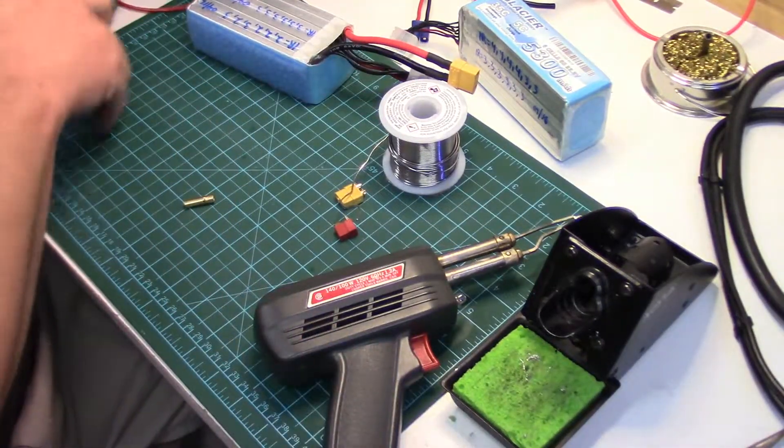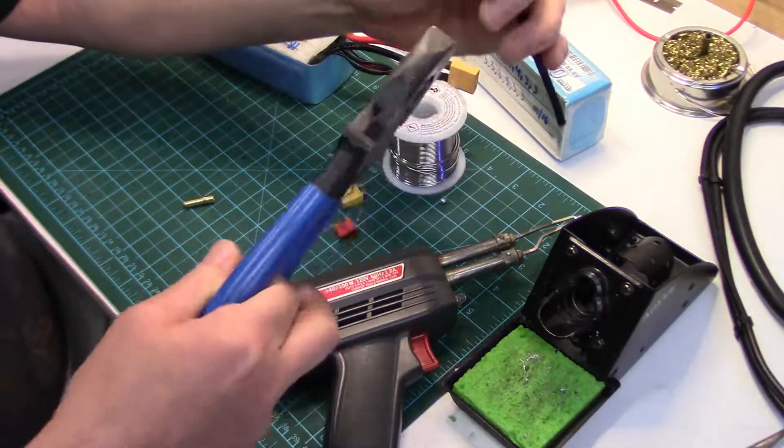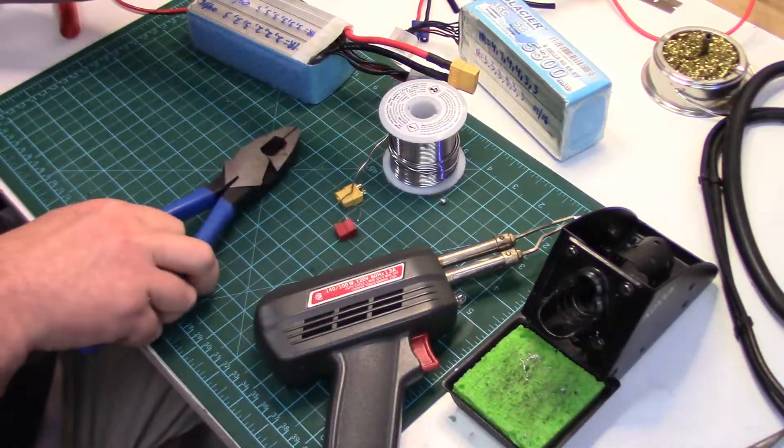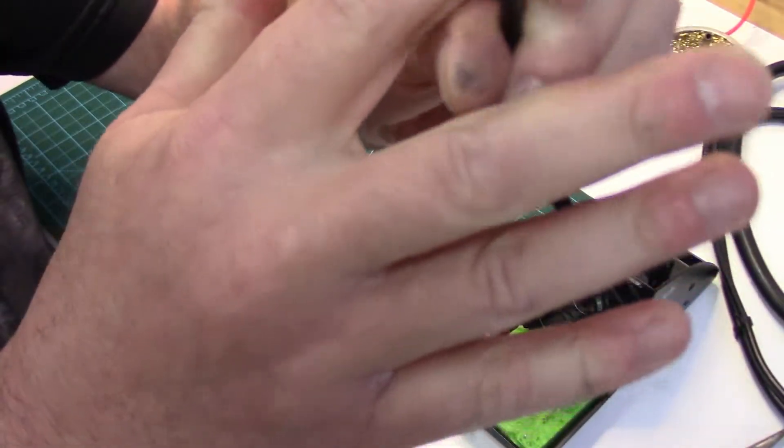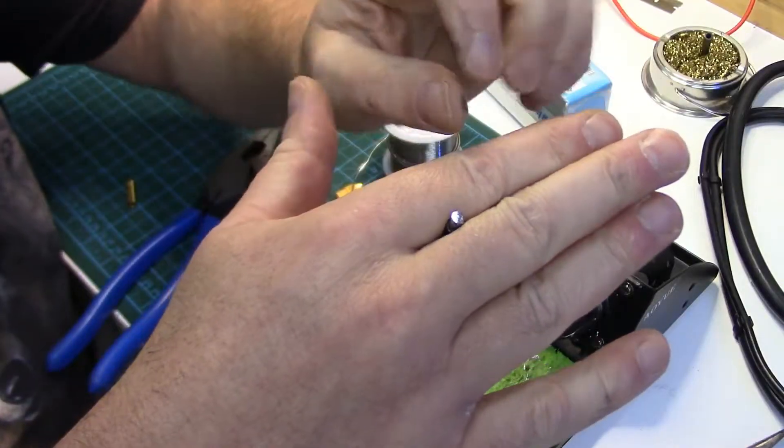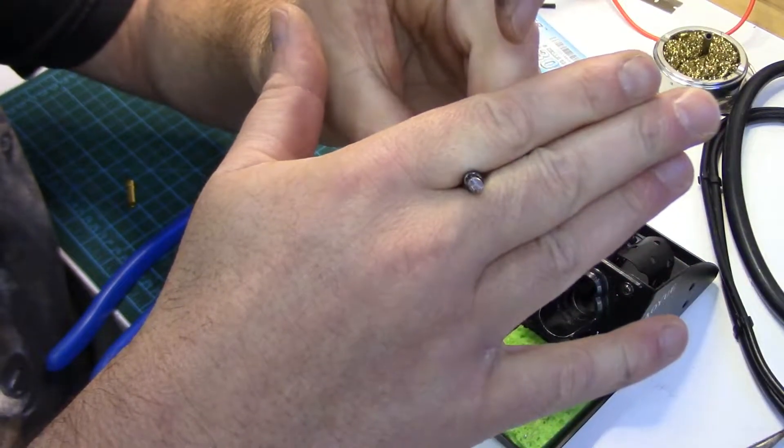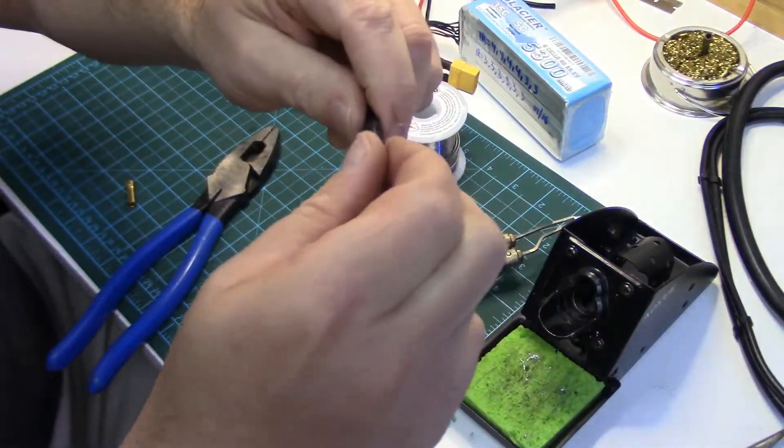So anyways, now that we've done that one, I'm just going to cut this one and you'll see the difference. See that, there's solder penetration right through. It's like a solid core now. And that's what tinning is all about.